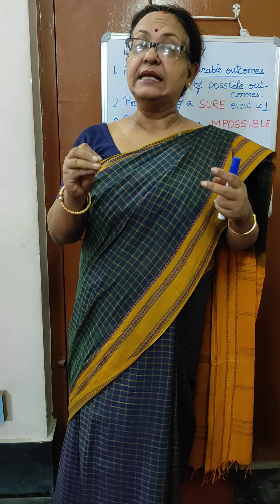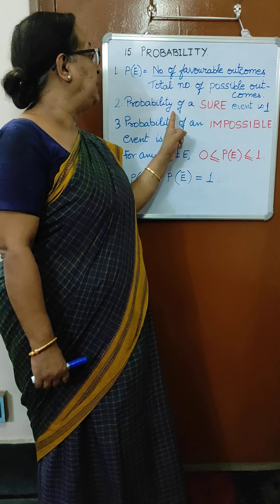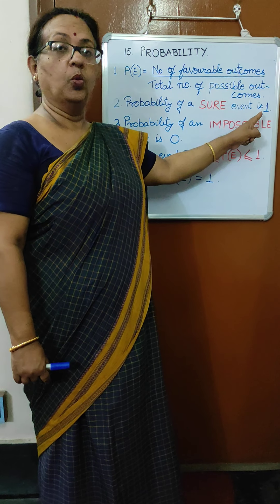Now suppose when rolling a die, I want a number less than 7. Any number I get — 1, 2, 3, 4, 5, or 6 — all are less than 7. So however many times I roll the die, I will always get a number less than 7. This is called a sure event, and the probability of a sure event is 1.